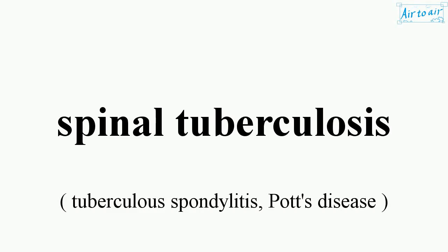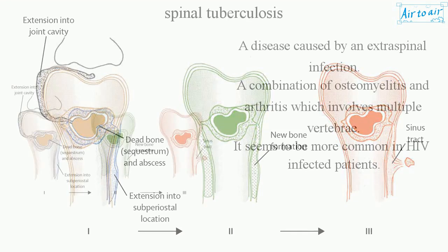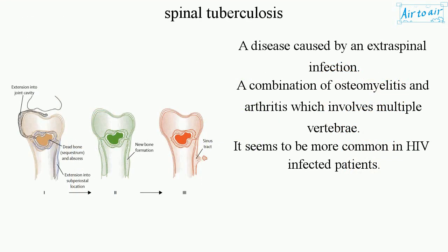Spinal tuberculosis is a disease caused by an extra-spinal infection, representing a combination of osteomyelitis and arthritis which involves multiple vertebrae. It appears to be more common in HIV-infected patients.